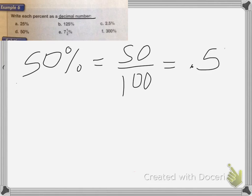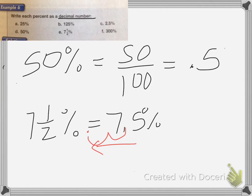For E, 7 and 1.5%, that's the same as 7.5%, because we wanted a decimal. And then I'm going to move the decimal point two places to the left. 1, 2, so it's equal to .075.